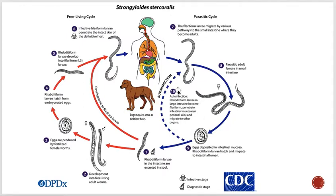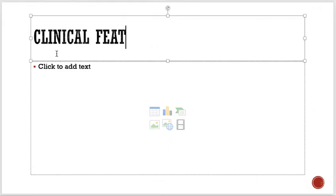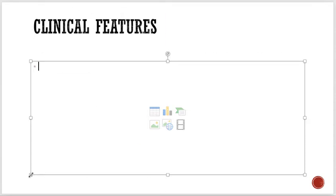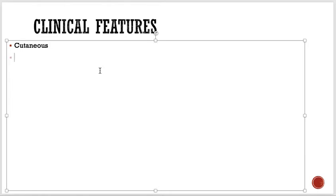To summarize the life cycle: filariform larvae are the infective form and they can cause auto-infection or hyper-infection. The clinical features of strongyloidiasis can be divided into cutaneous manifestations, pulmonary manifestations, intestinal manifestations, and hyper-infection in malnourished people.